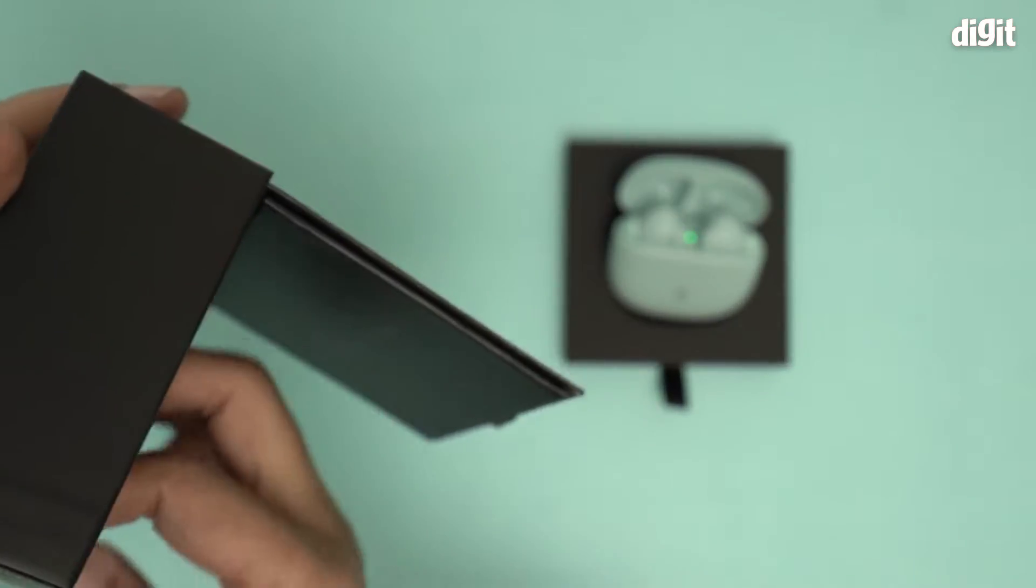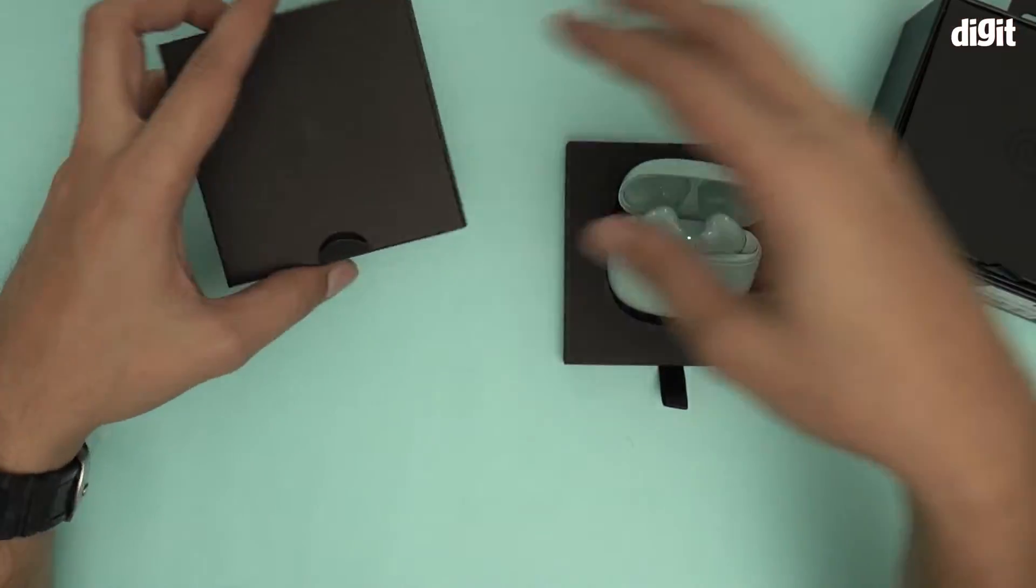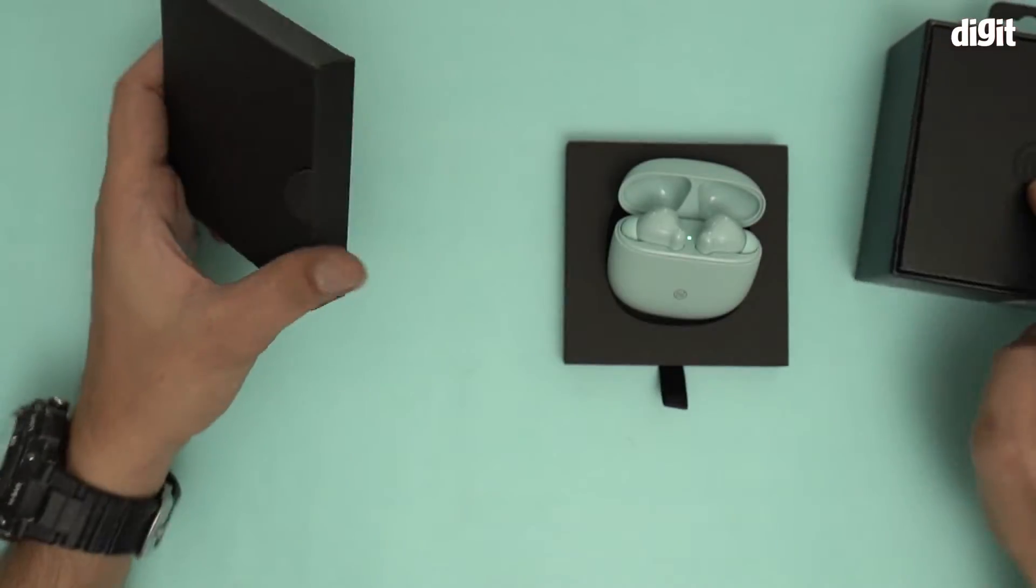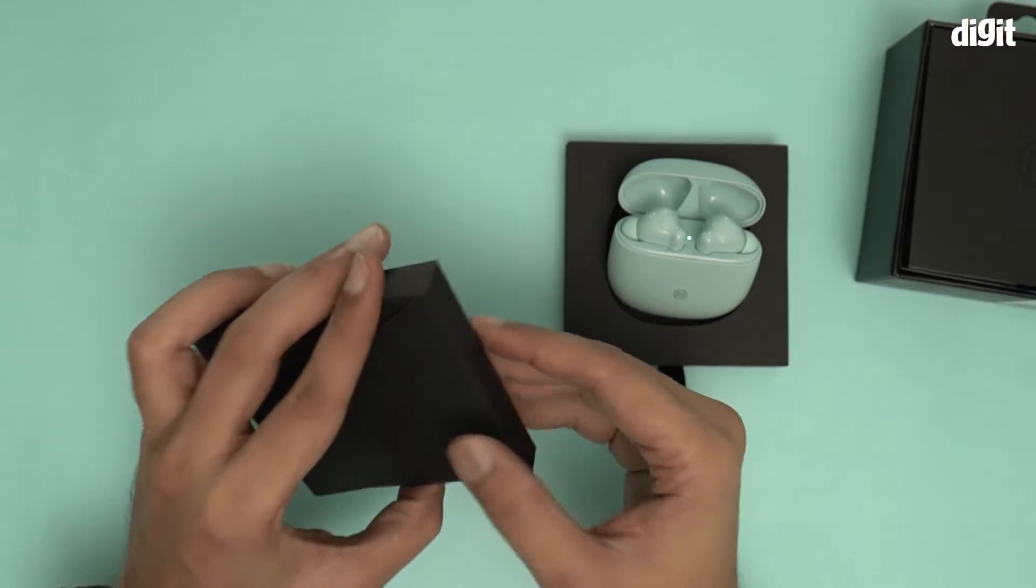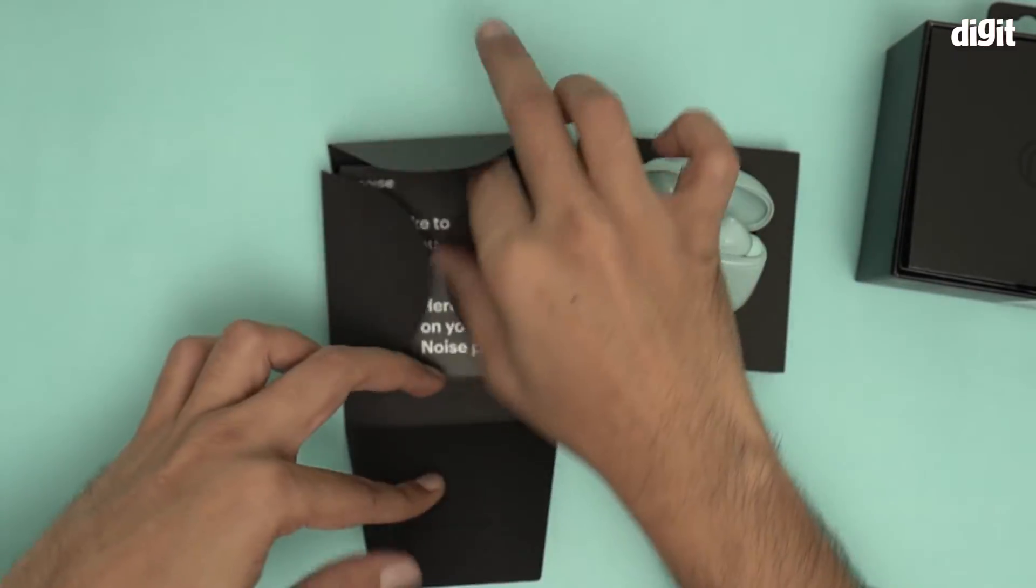Anything else in the box? No, that's it. That's all you get from this box. So let's see what's in this particular box. It seems this has the charging cable and the user manual. You'll find out soon enough.